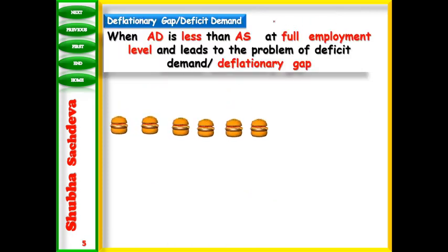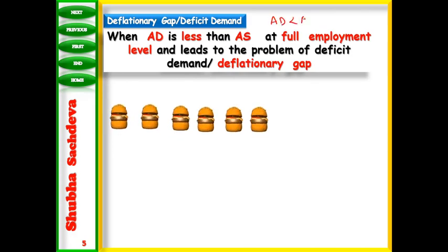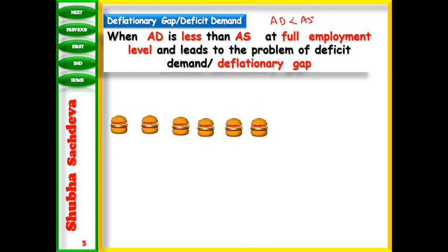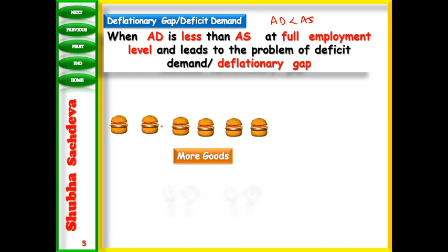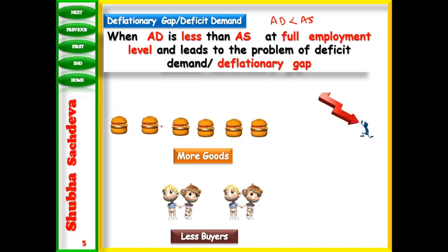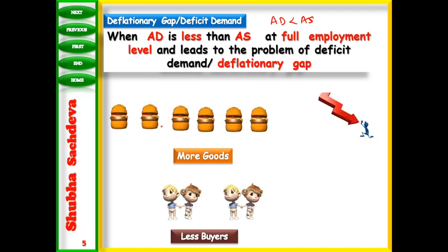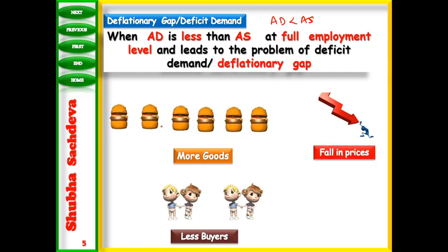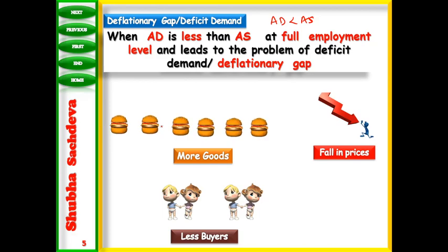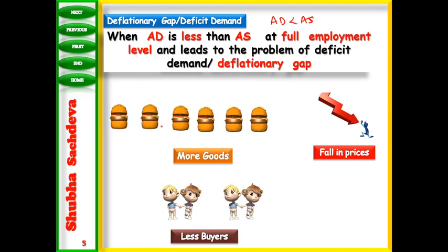What is deficient demand? It is the opposite — when demand is less than aggregate supply, although supply has been produced by employing all resources completely. We are left with an accumulation of stock. So we reduce production, reduce employment, income reduces, and we have to reduce prices to increase demand. This leads to the problem of deficient demand or deflationary gap.